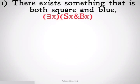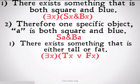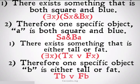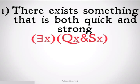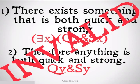Here are some more examples. There exists something that is both square and blue, therefore one specific object A is both square and blue. There exists something that is either tall or fat, therefore one specific object B is either tall or fat. What we cannot do is say there exists something that is both quick and strong, therefore anything — any specific object — is both quick and strong. That's going to be invalid.